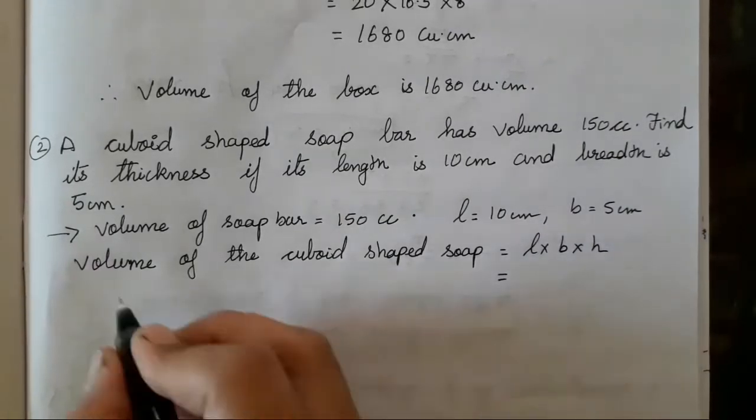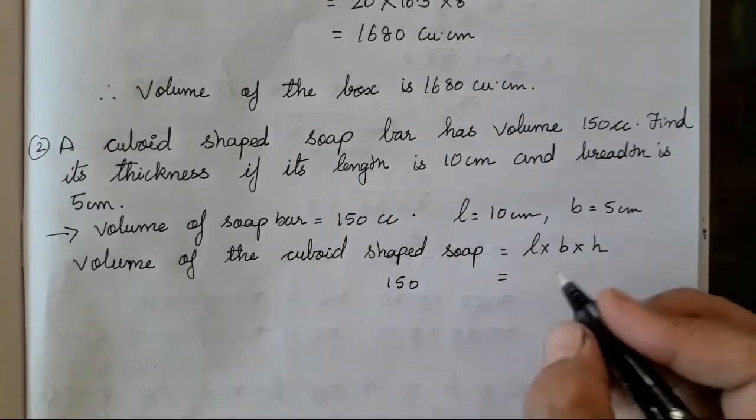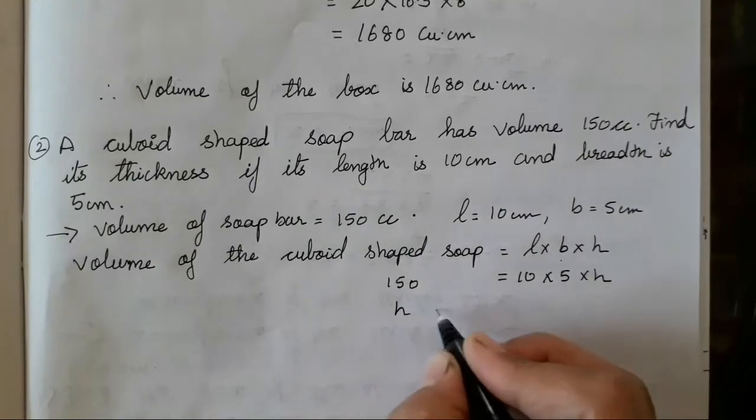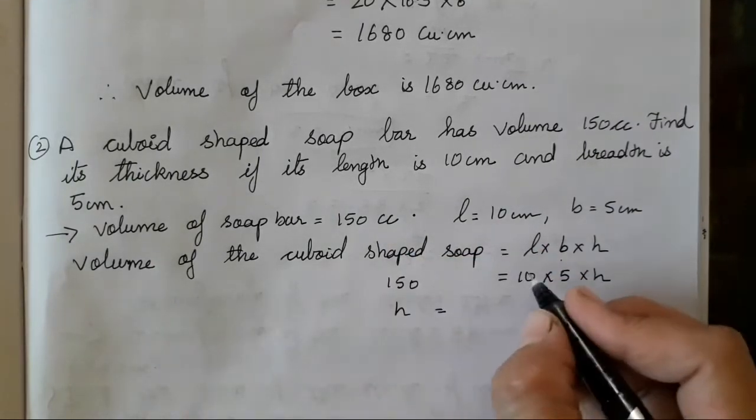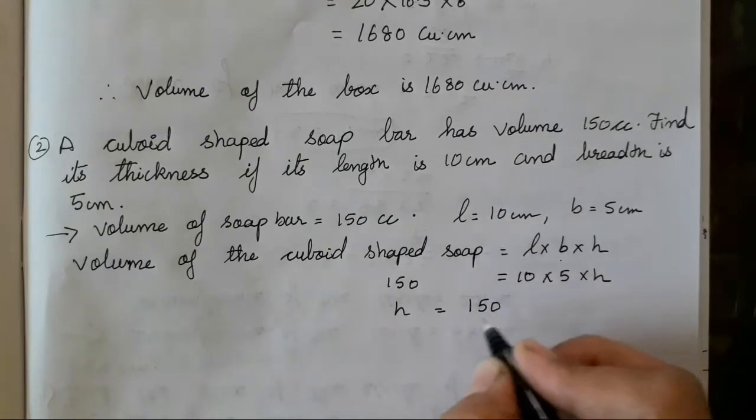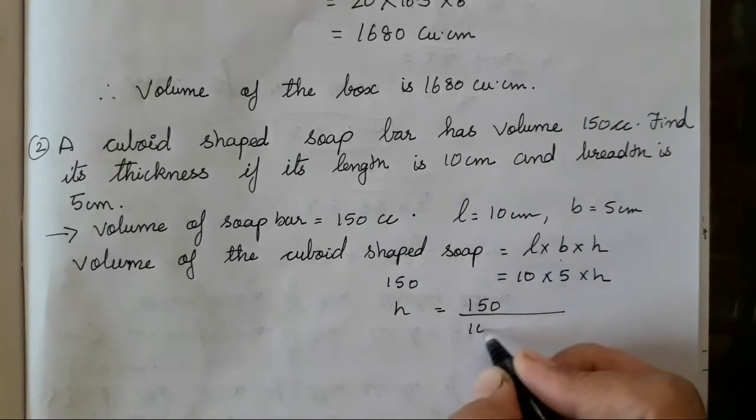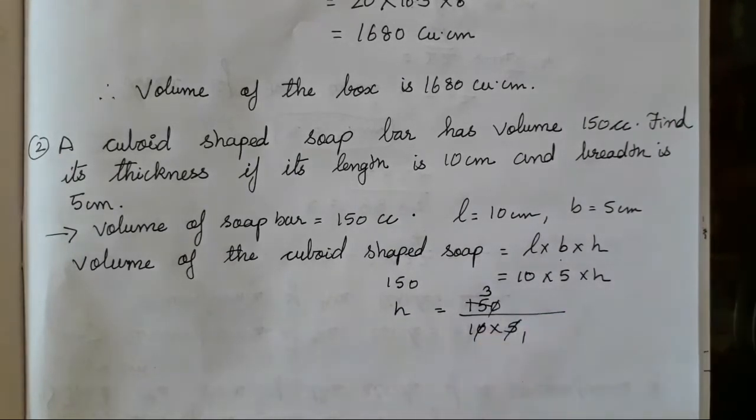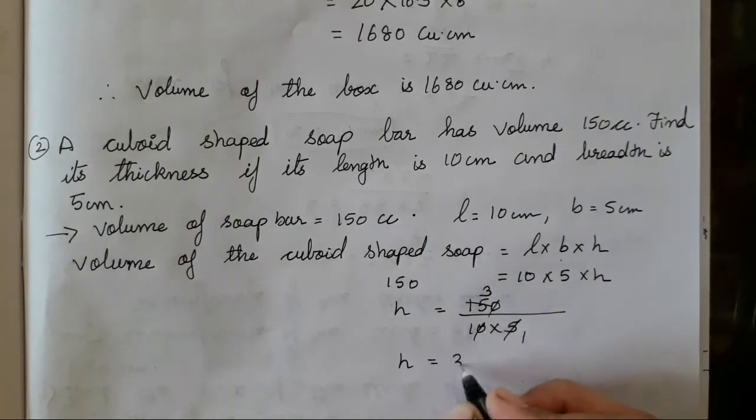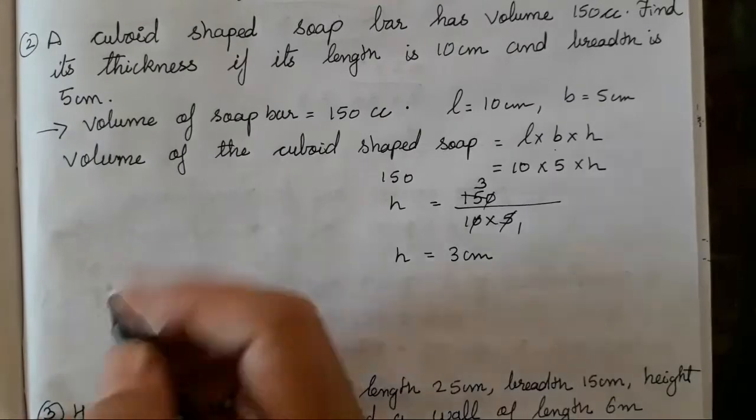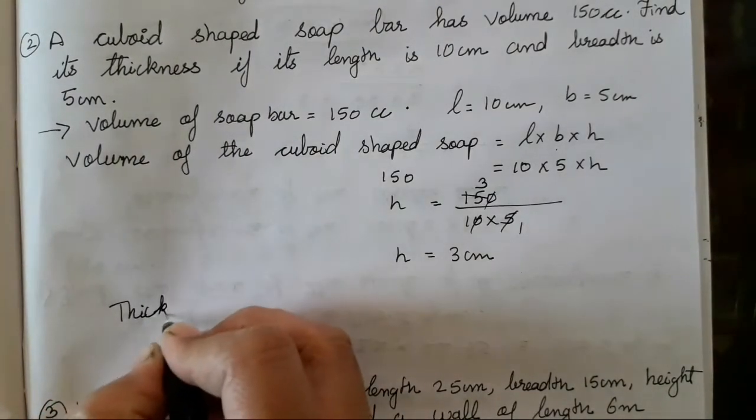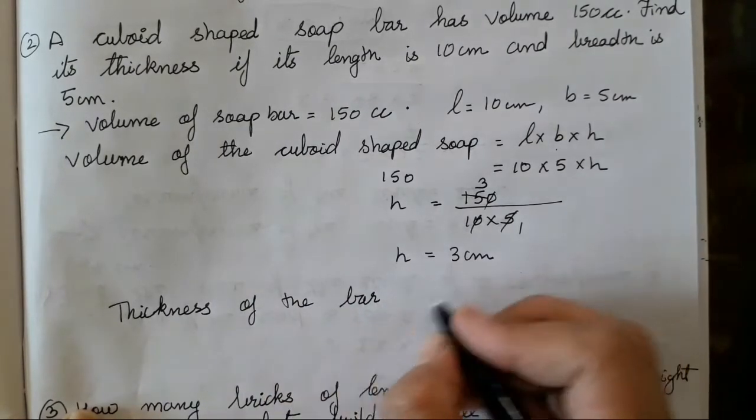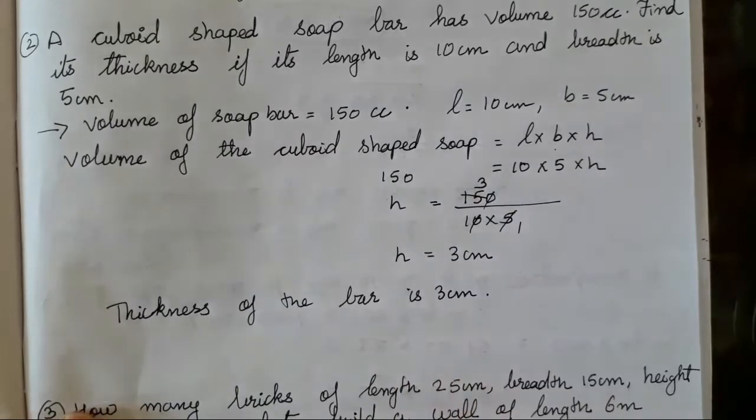Volume is 150 cc. L is 10, B is 5, H we have to find. So let's take H to the left hand side and all the numbers to the right hand side. It is going to be 150 upon 10 into 5. This is very easy children. H equals 3 cm. So thickness of the bar is 3 cm. Got it?